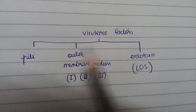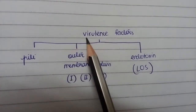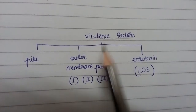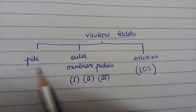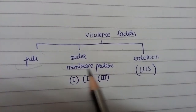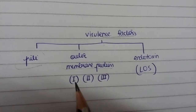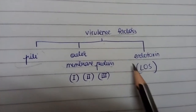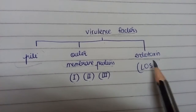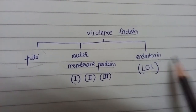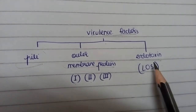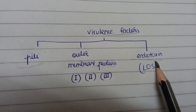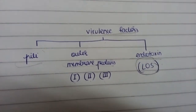Today we are going to be talking about the virulence factors of Neisseria gonorrhoeae, which include the pili, outer membrane proteins of class 1, 2, and 3, and the endotoxin — which is very different from that of other gram-negative bacteria because instead of being a lipopolysaccharide, it is a lipooligosaccharide.